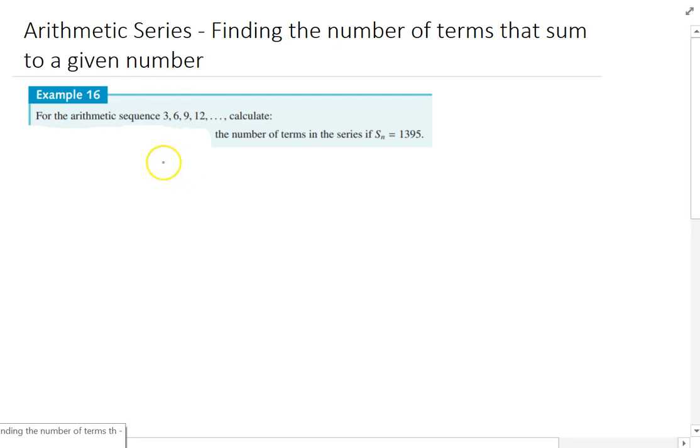So it's another question here where we're going to have to rearrange the arithmetic series formula. The arithmetic sequence is 3, 6, 9, 12, and we want to know how many terms would I have to add up if I wanted the sum of them to be 1395.